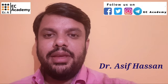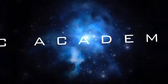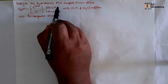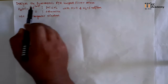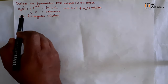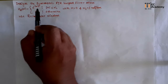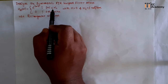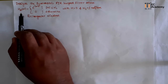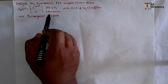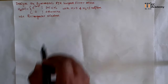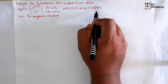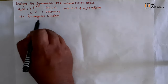Hello friends. Welcome to EC Academy. In this lecture, let us understand a problem on FIR filter. We need to design the symmetric FIR low pass filter whose desired frequency response is hd(ω) = e^(−jωτ) for |ω| ≤ ωc, and hd(ω) = 0 otherwise. The filter length is M = 7, ωc = 1 radian per sample, and we use a rectangular window.